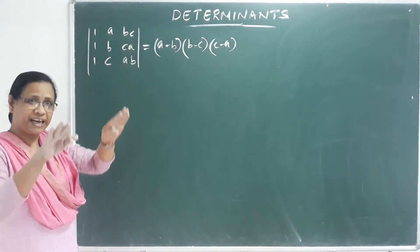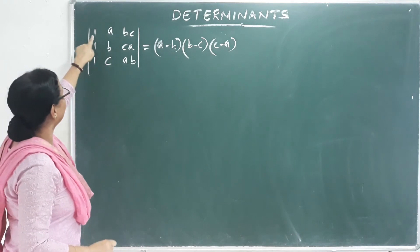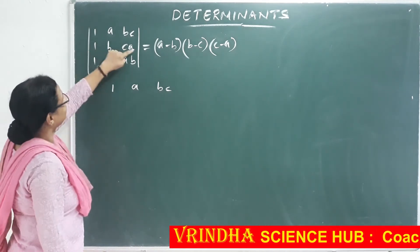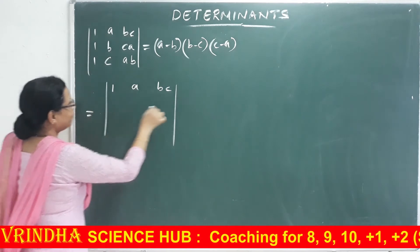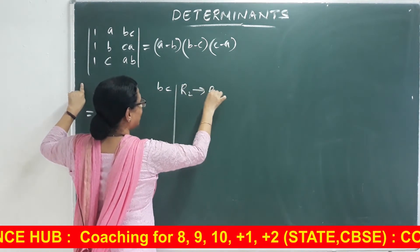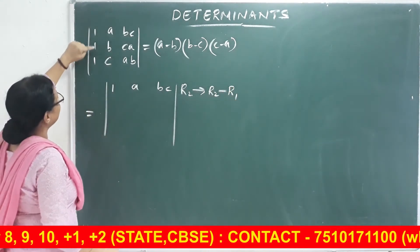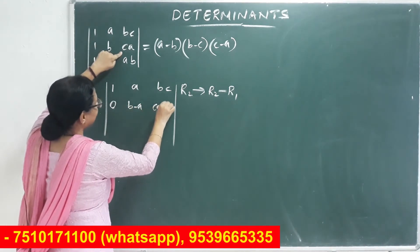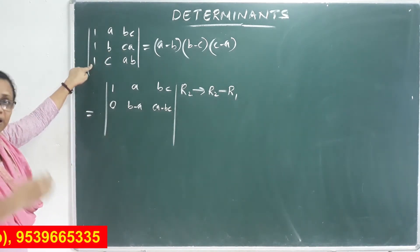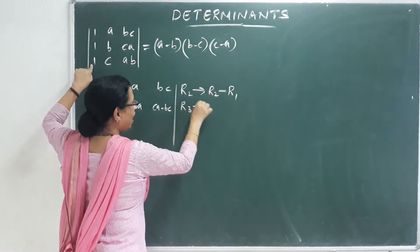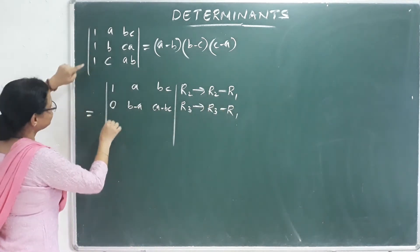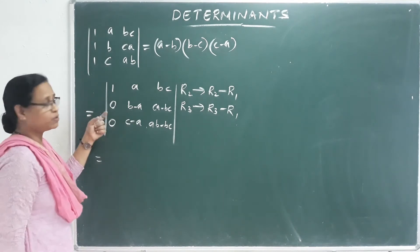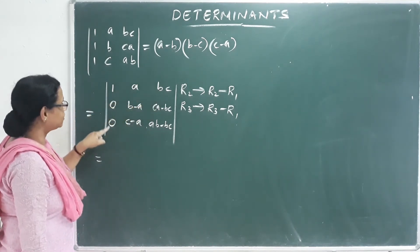It will reduce the order from 3 to 2. What I want to do is 1, A, B, C. Second row: R2 tends to R2 minus R1. If you subtract: 1 minus 1 is 0, B minus A, and C·A minus B·C. Then R3 tends to R3 minus R1: 1 minus 1 is 0, so C minus A, and A·B minus B·C.